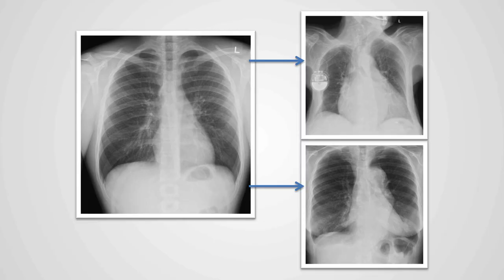The gray scale of a structure can stay the same, but the structure can increase or decrease in size. Here we have an example of a normal. If we focus on the central structures, we can see the normal appearance of the heart. In this example, we see that the heart is grossly enlarged.